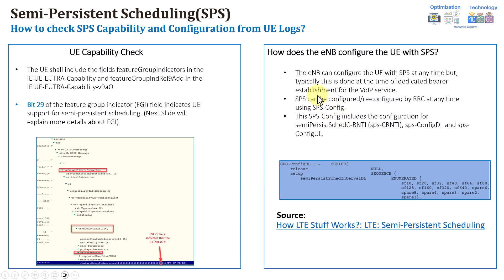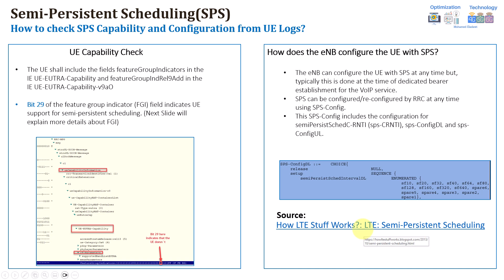The next part is about whenever the eNB will configure the UE with SPS. The configuration would be done through layer 3, while the activation will be done through DCI information. For example, this is an RRC configuration message being sent — it will have this SPS configuration downlink or even uplink. If you'd like to get more details about this part, you can refer to the link below which has very good information.